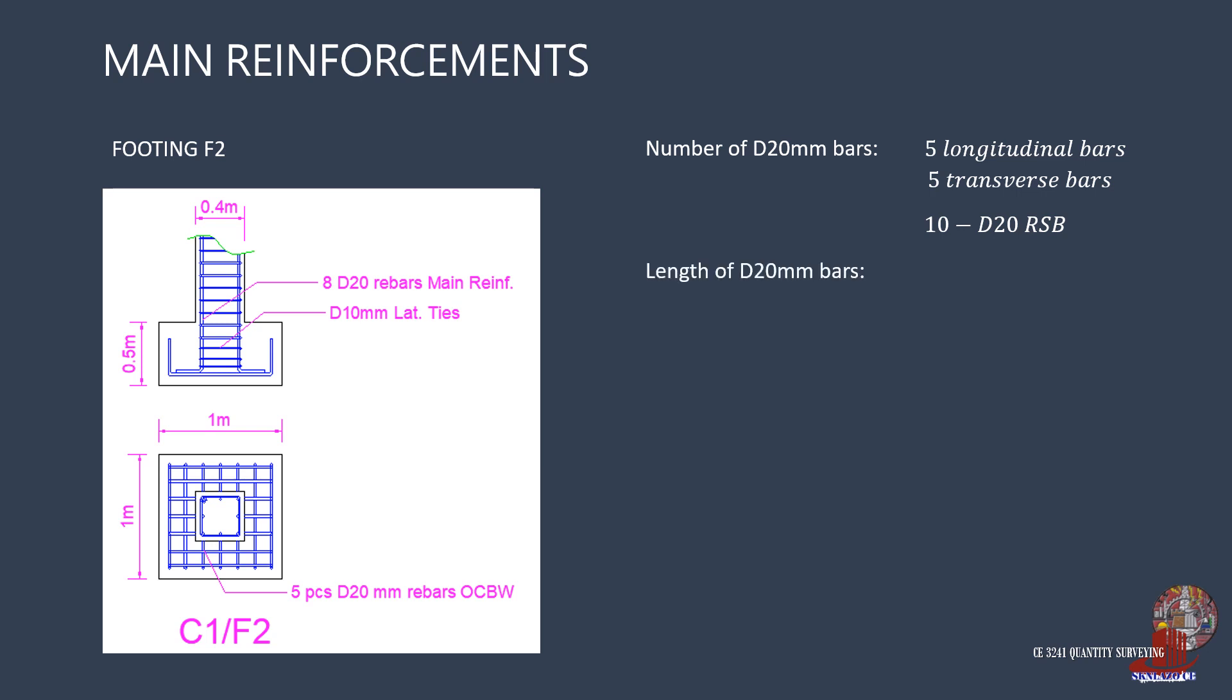The length of the bar is still the same as F1, because the footing dimension is still 1 meter by 1 meter, just like footing F1. So use the length of 1330mm.